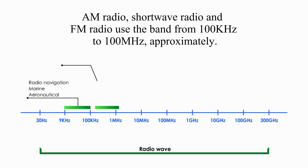AM radio, shortwave radio, and FM radio use the band from 100 kHz to 100 MHz approximately.